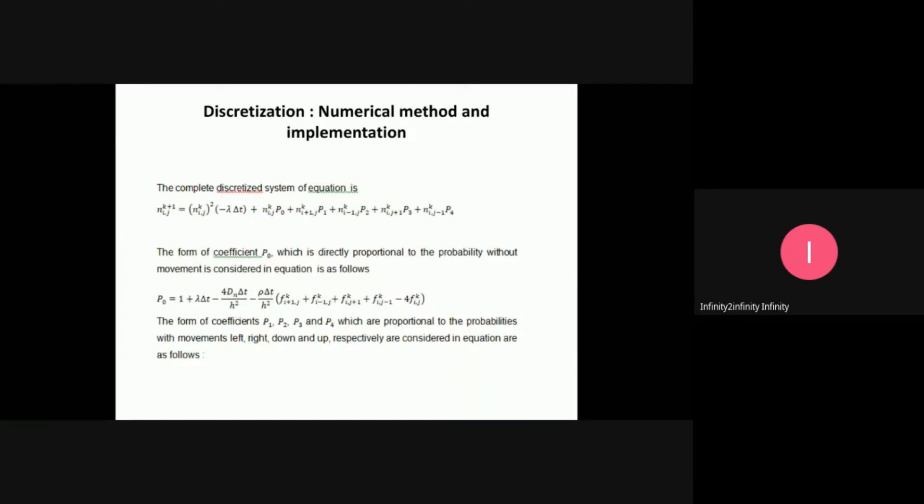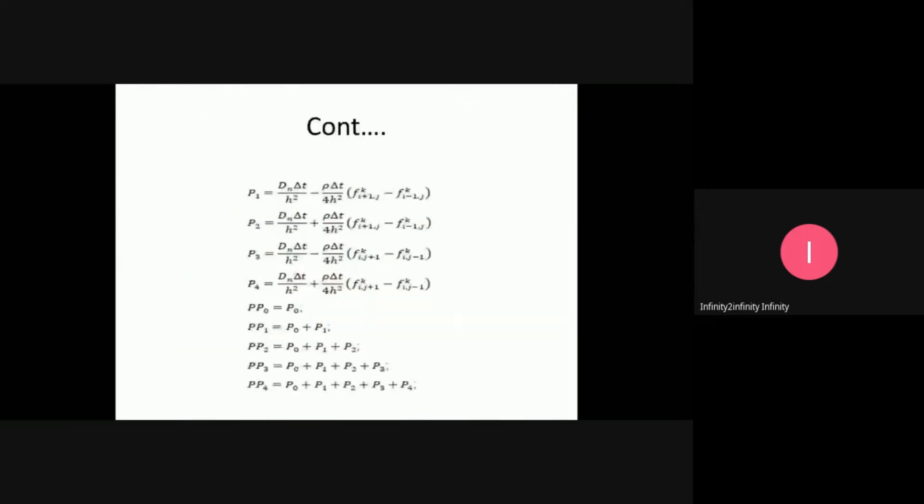First was the tumor cell density equation. After discretization, I obtained this equation with coefficients p0, p1, p2, p3, and p4. These are the coefficients for the left, right, up, and down movements of the tumor cell. These coefficients are obtained in the discretized partial differential equations.